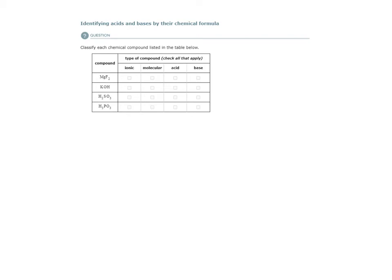All right, so in this topic we are identifying acids and bases by the chemical formula. There are some important hints that we can gather from the chemical formula to help us determine what type of compound we have.